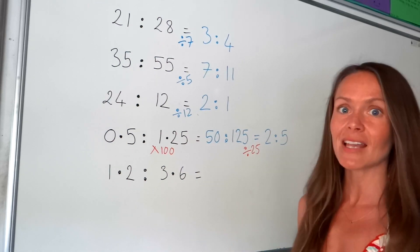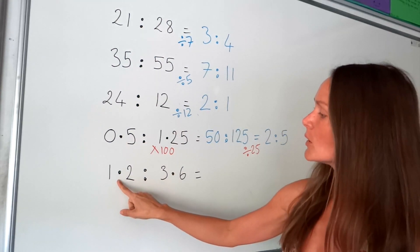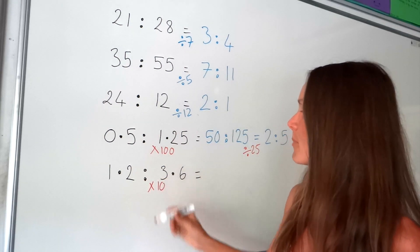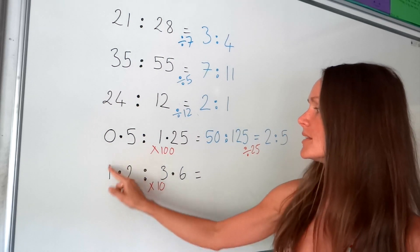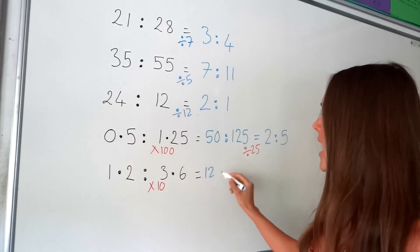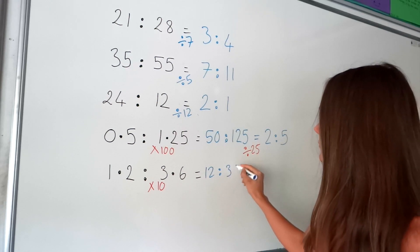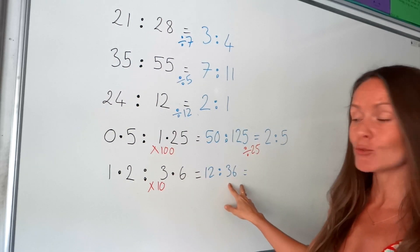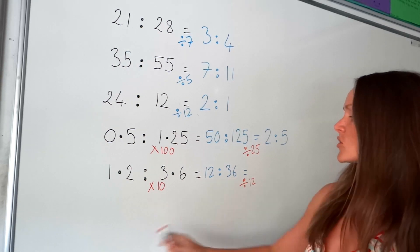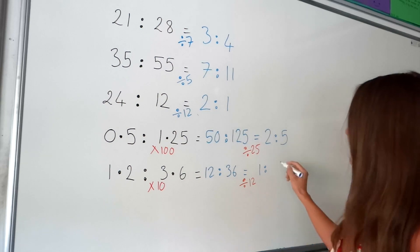I'm going to do exactly the same on the next one — I need to get rid of the decimal numbers. In this one, because there's only one number after the decimal point in both, I only need to multiply by 10. Multiplying by 10 gives me 12 and 36, because the decimal point moves one place. The highest common factor in these two numbers is 12, so I'm dividing by 12.